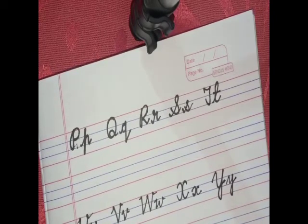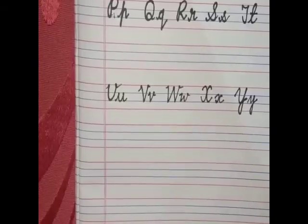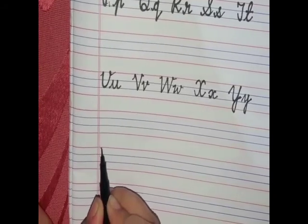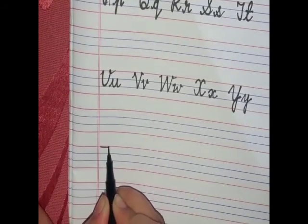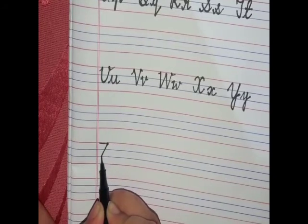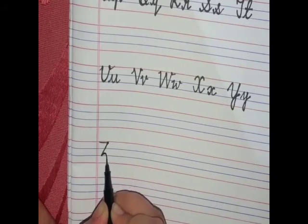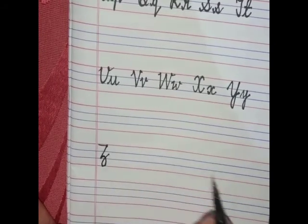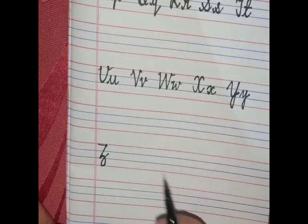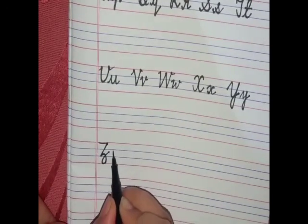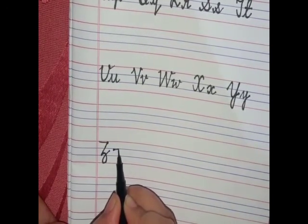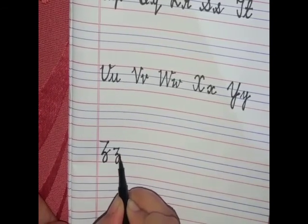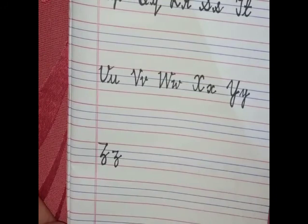Now moving forward to our last letter, capital Z. Make a line from left to right, then a bending line, make a curve touching the fourth line, and one more curve touching the second line. Very nice. Formation of small z: it is written in the last three lines only and it is the same as capital Z. Can you see? Very nice.